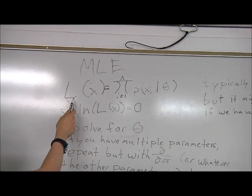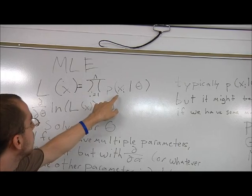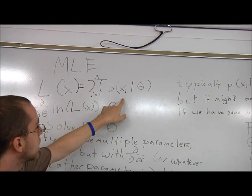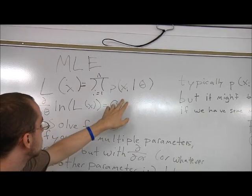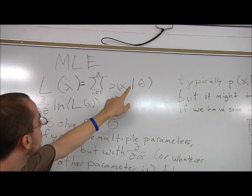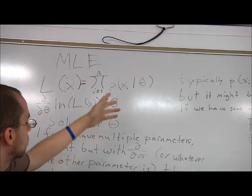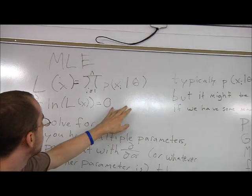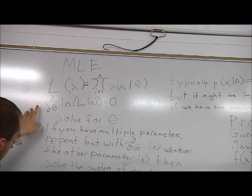The likelihood function of x is going to be the product of the probability of each value of x given whatever value of theta, or whatever parameter. And then, typically, the p of xi is going to be just the little f of x. There might be 1 minus big F of x if we have some max value.